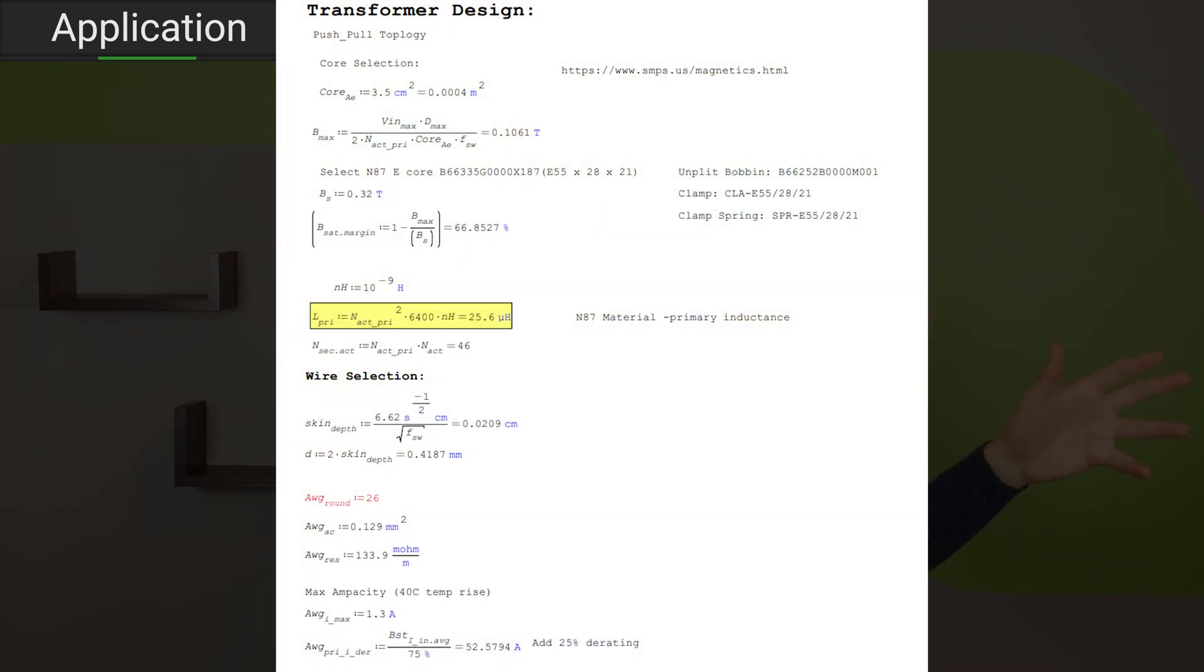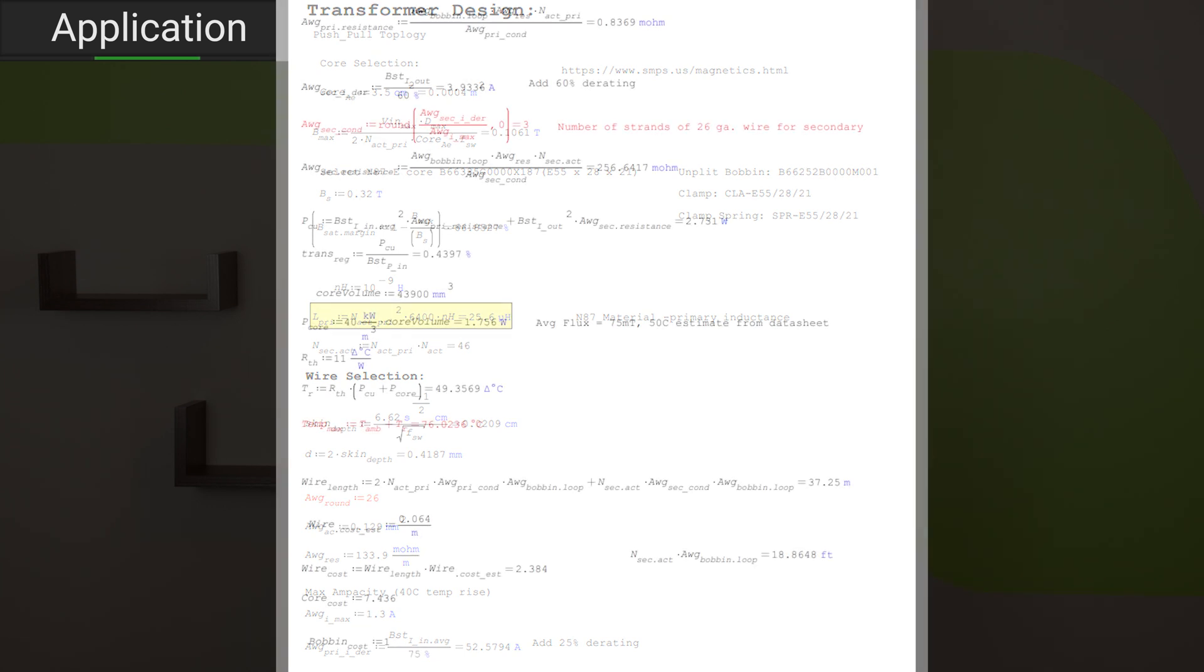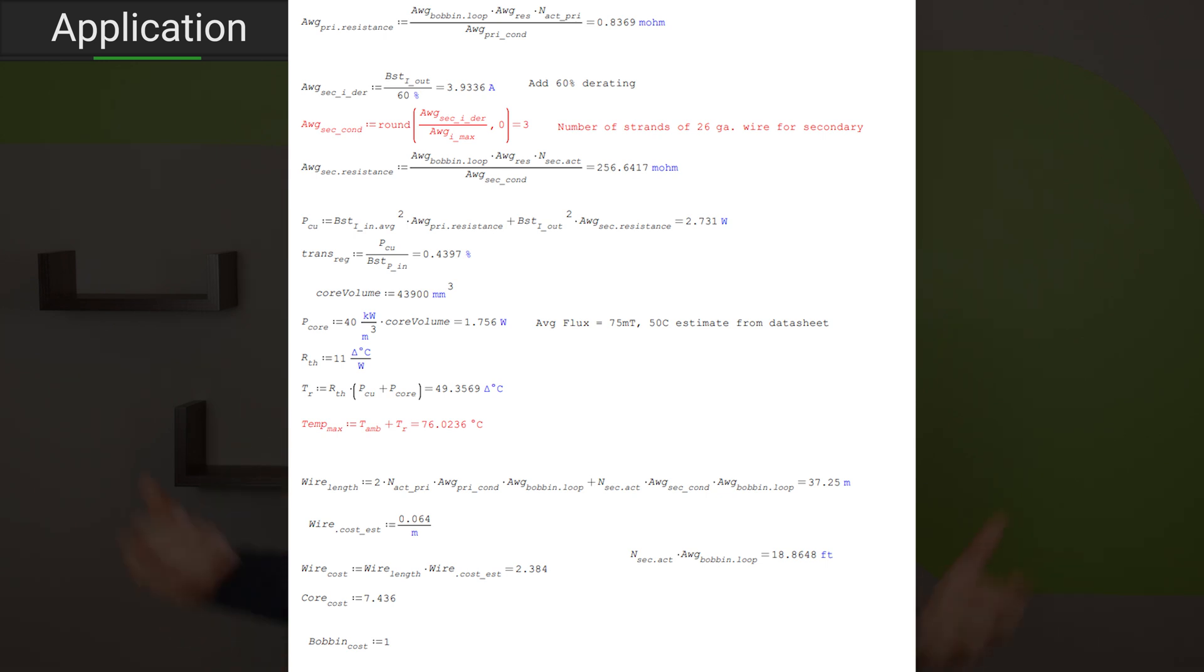I see one major decision when starting an inductor design, choosing your analysis method. The first of these methods is what we did for our push-pull transformer a while back. Pick a core, pick a material, and spend a day crunching the numbers in a symbolic math tool like MathCAD to determine if it will meet all of our specifications. We've done this before, it works pretty well, but it's also soul-crushing when the end result is, nah, pick a different core and start all over again.